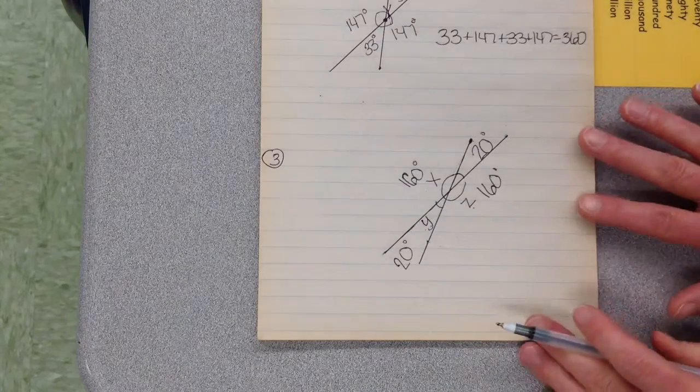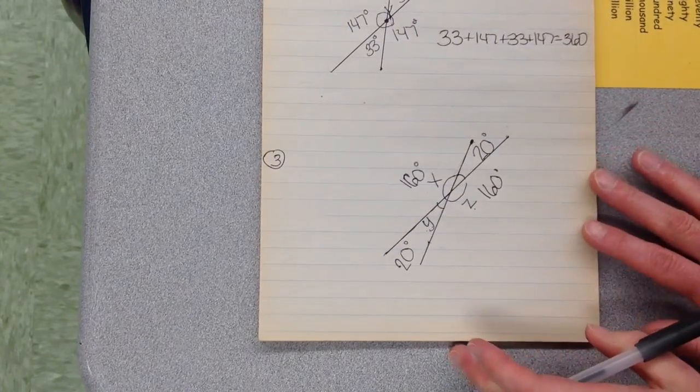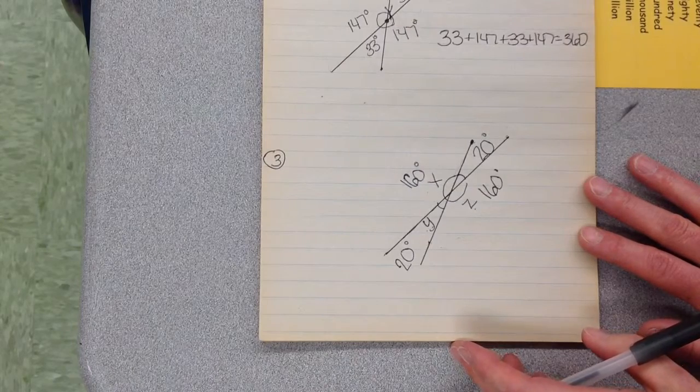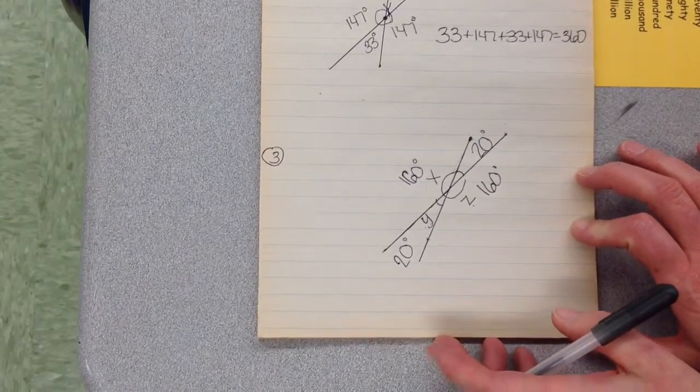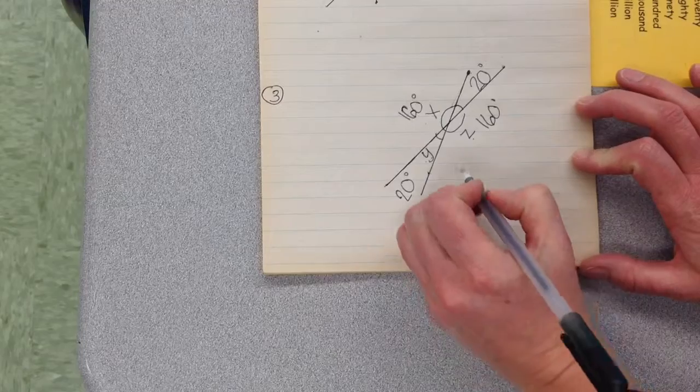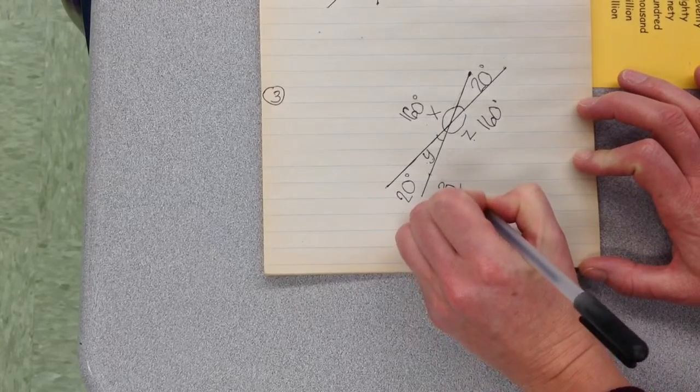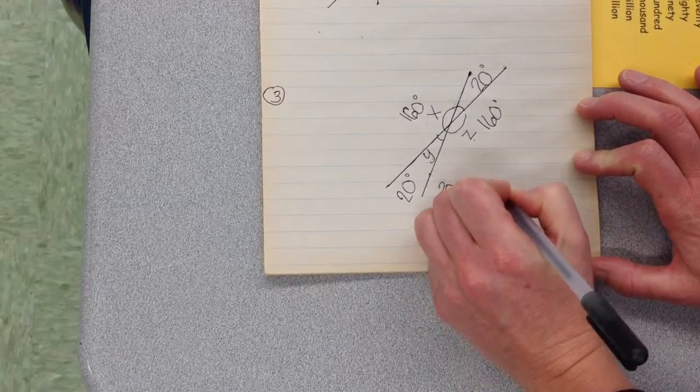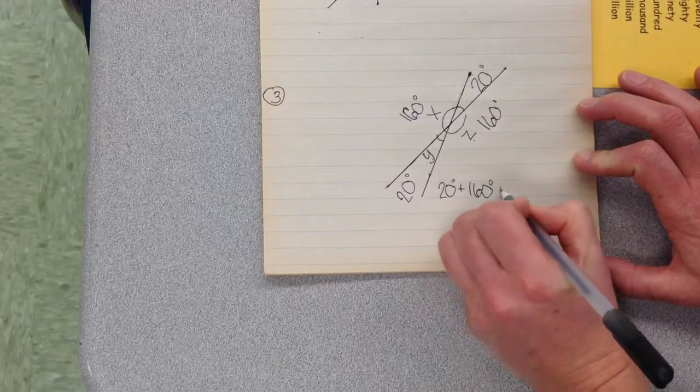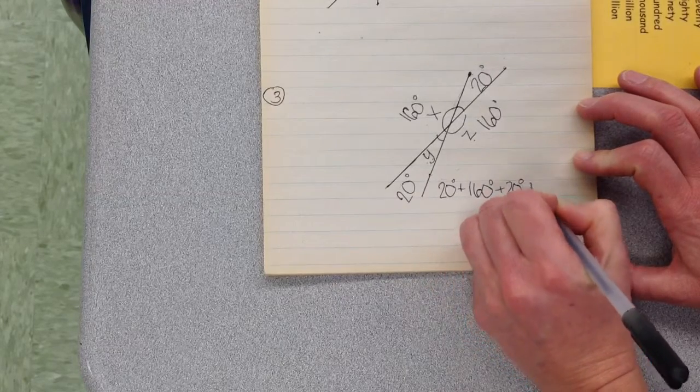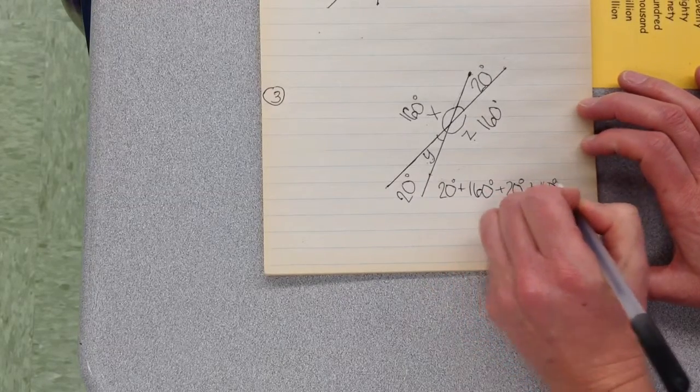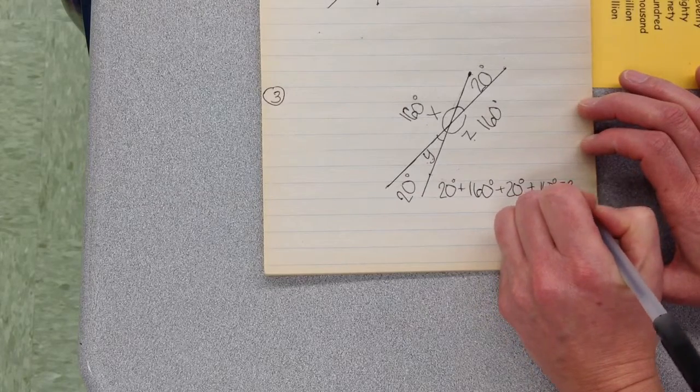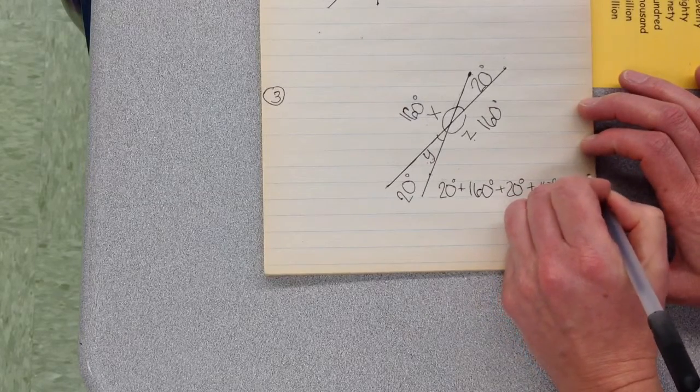So by having one angle and just covering up parts of it makes it a lot easier for you to see. So now let's go ahead and write our sentence. We have 20 plus 160 plus 20 plus 160 equals 360.